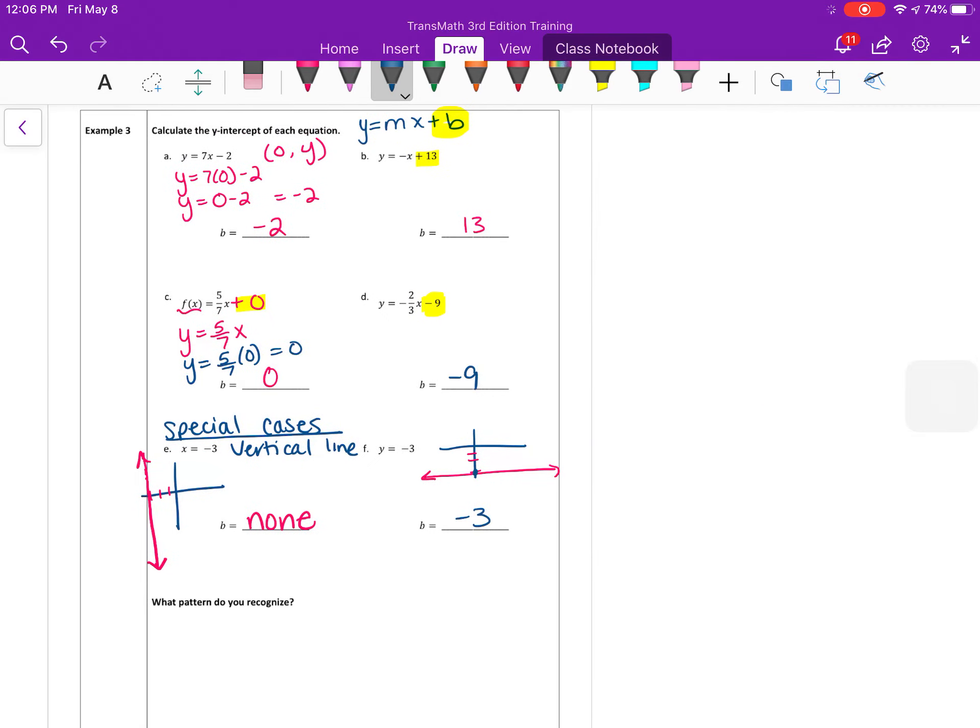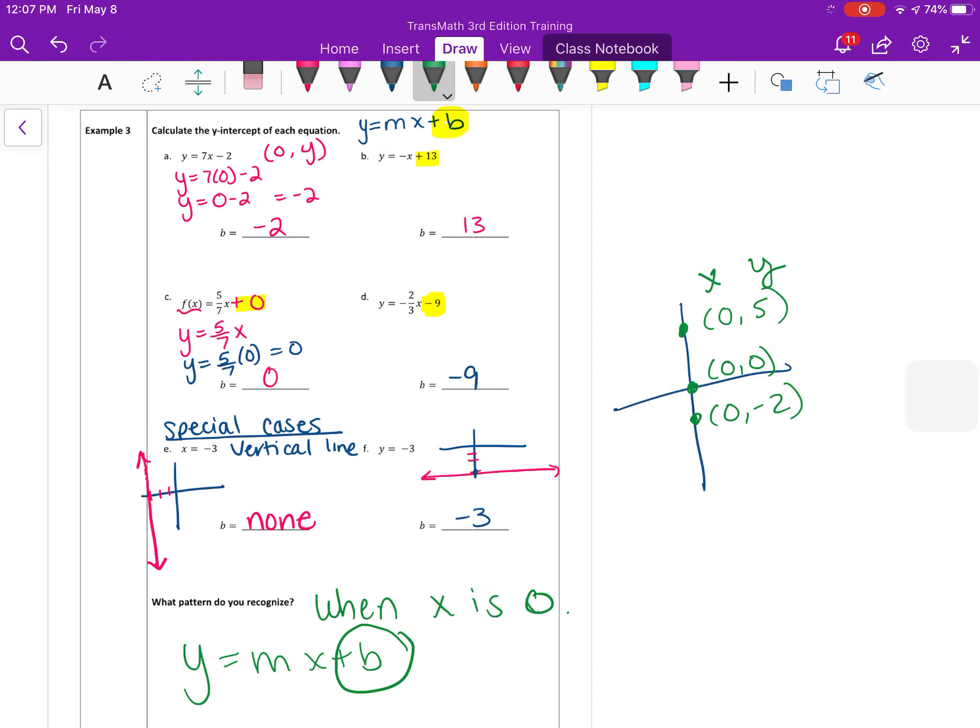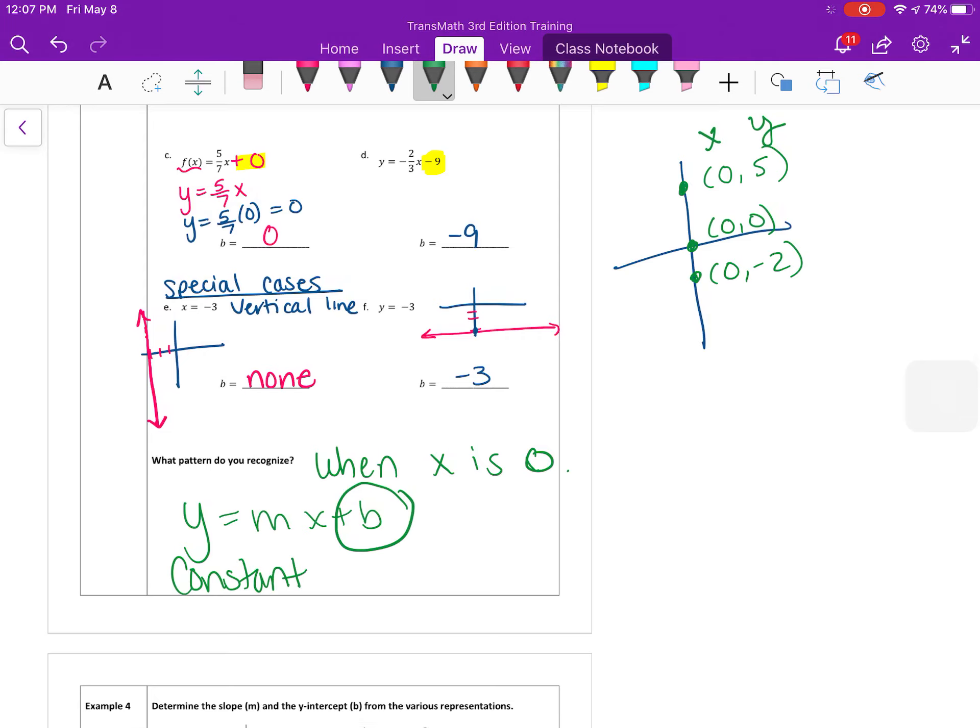So plugging in 0 for x and getting that y-intercept, so when x is 0, what does y equal? That's where it's going to cross the y-axis, all those points along the y-axis are 0 something, like this one is 0, 5 for say, 0, negative 2, 0, 0. So it's whenever x is 0, y-value is your y-intercept. So I also want you to recognize that the pattern is the constant number at the end is the y-intercept. And what I mean by constant is it's the non-variable term, the term without the x.